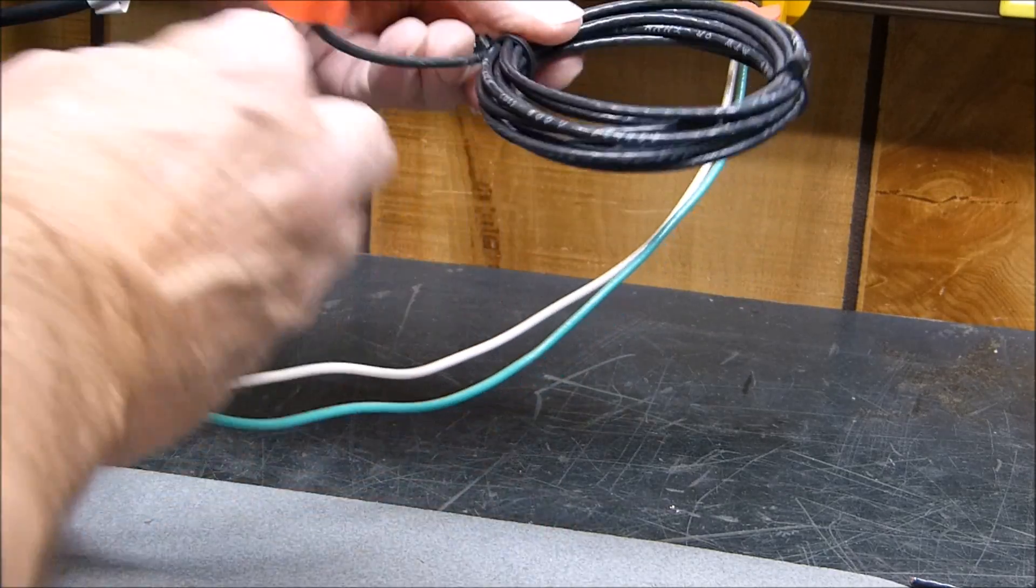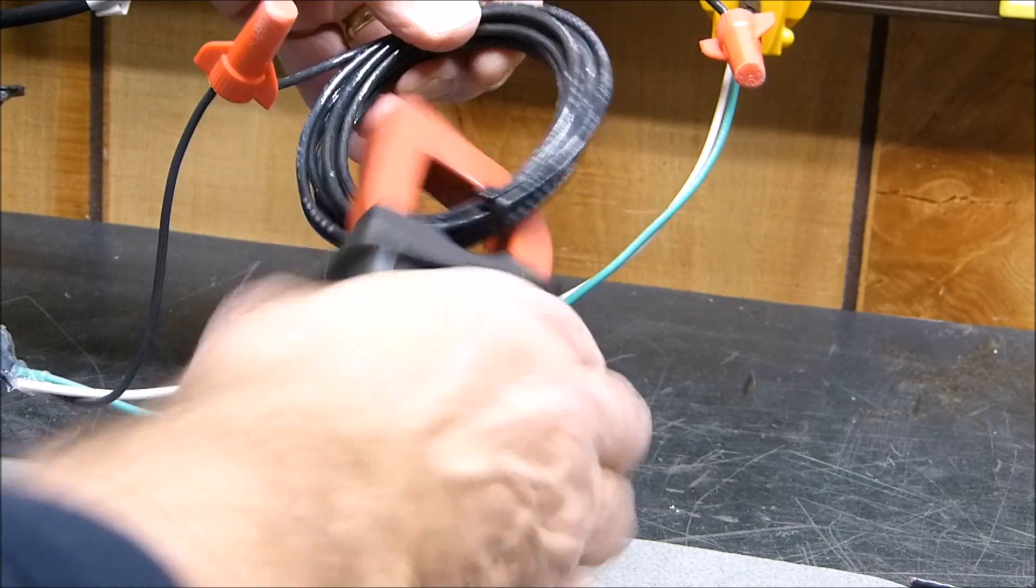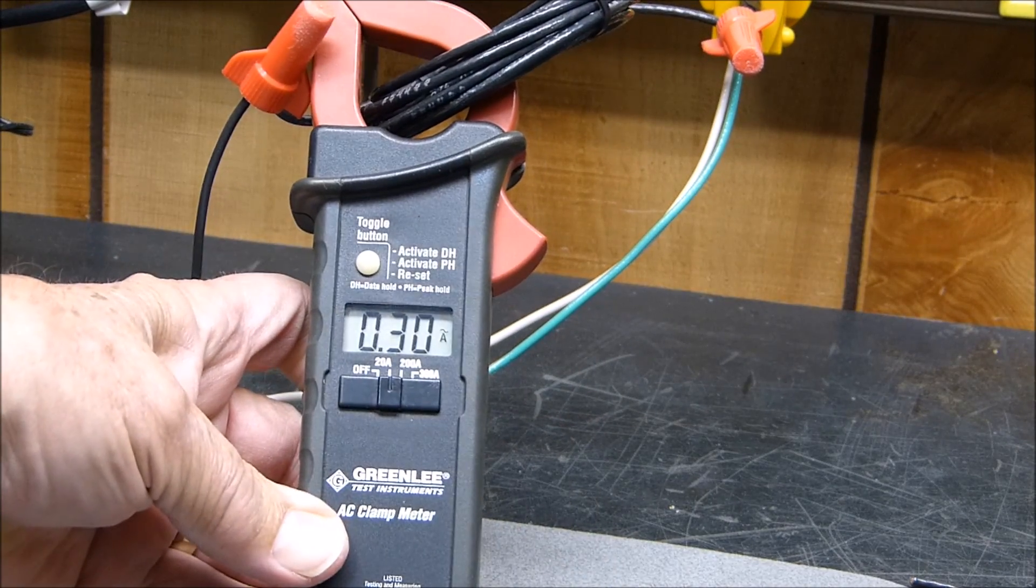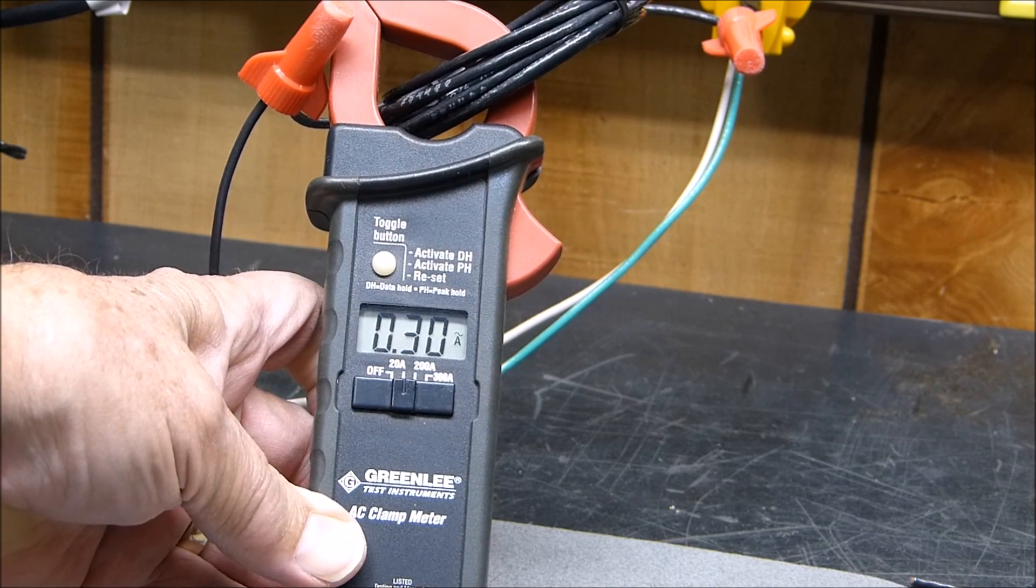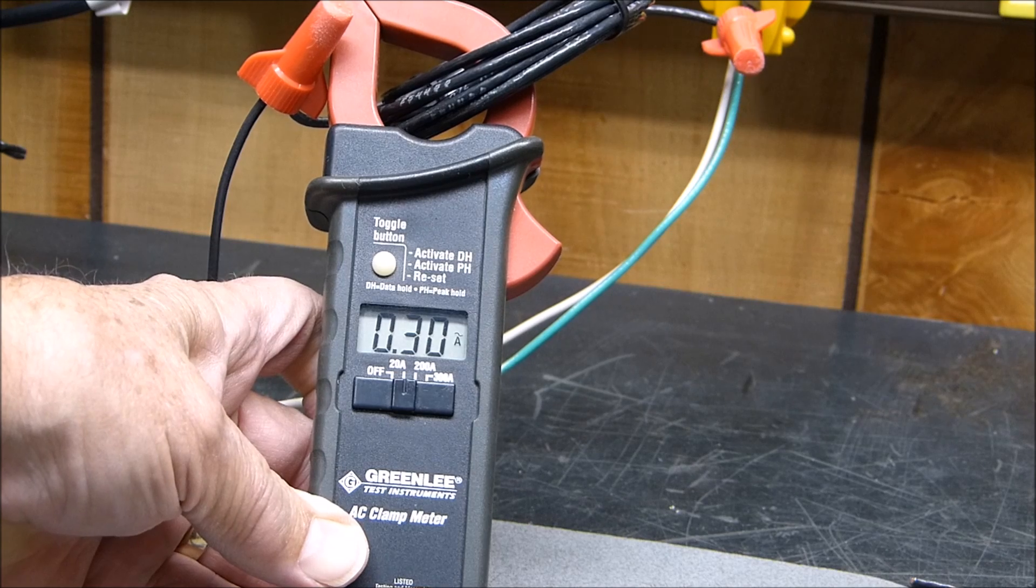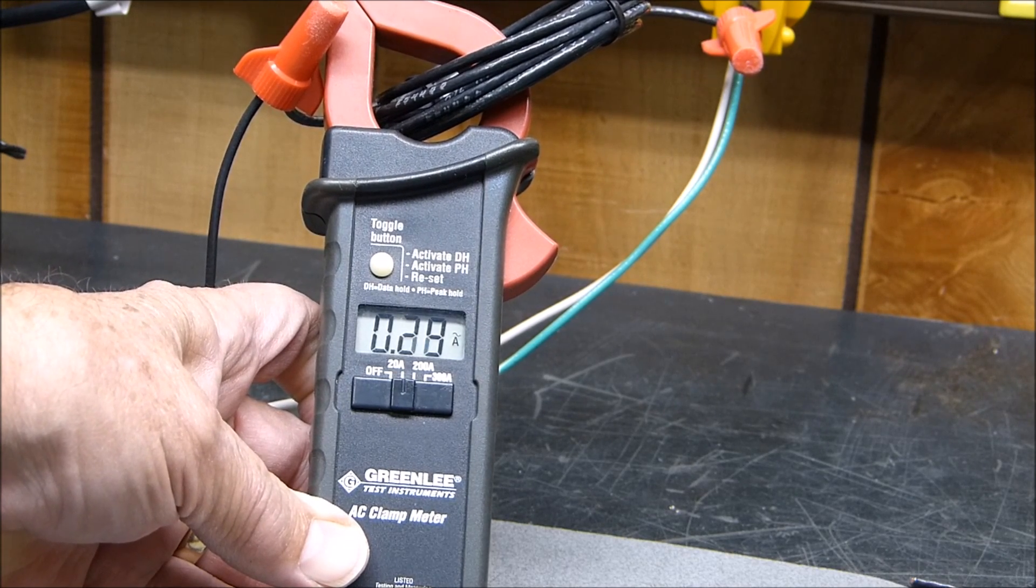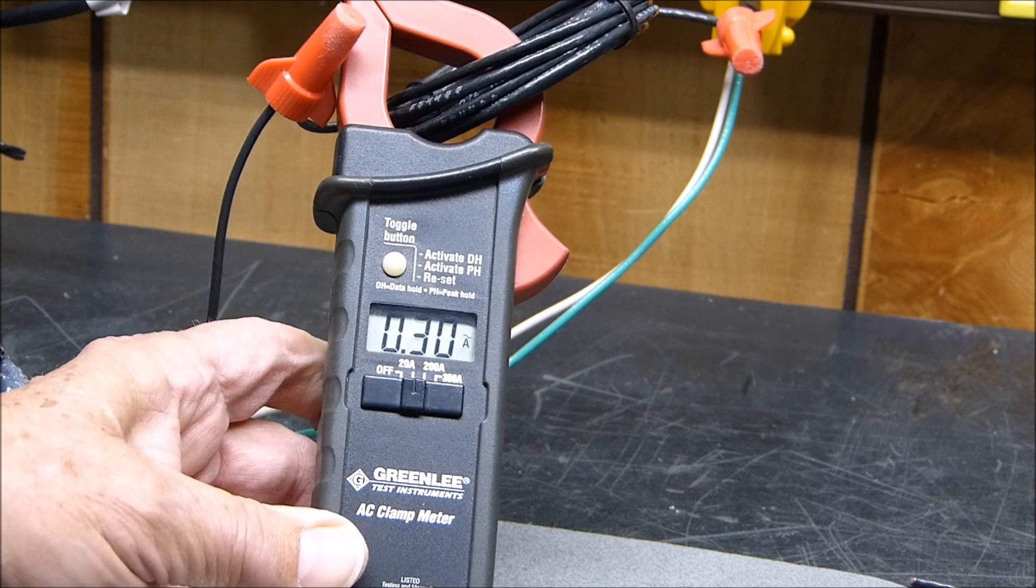But this is just simply ten turns. I mean, there's absolutely nothing fancy about it. When I clamp it around there, now it says it's 31 or 30. Now you got to know that you're multiplying it times 10. It's not really 0.3 amps. It's 0.03 amps, but it actually is 30 milliamps. So you can measure really low power stuff.